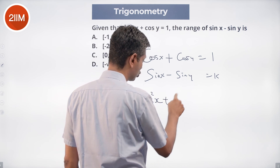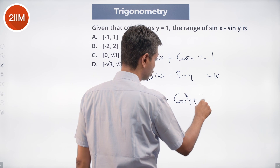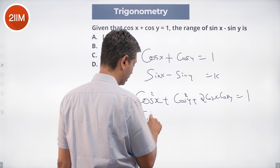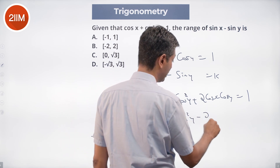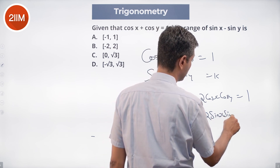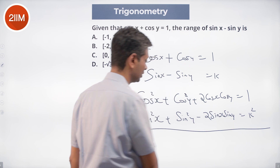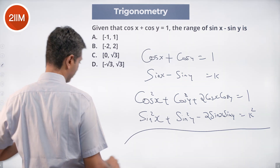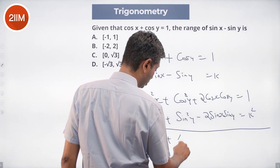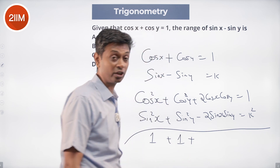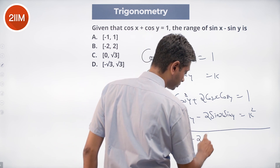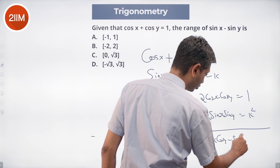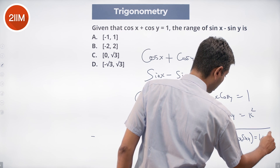So we say cos squared x plus cos squared y plus 2 cos x cos y equal to 1. Sin squared x plus sin squared y minus 2 sin x sin y equal to k squared. What do we do? We add these two. Cos squared x plus sin squared x is 1. Cos squared y plus sin squared y is 1, plus 2 times cos x cos y minus sin x sin y.